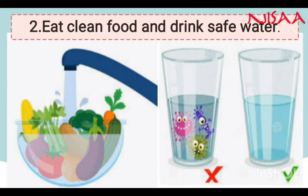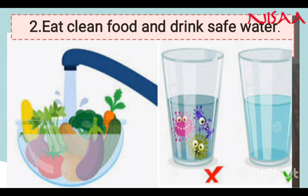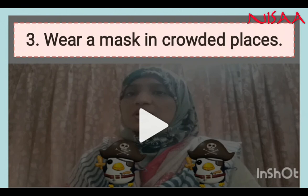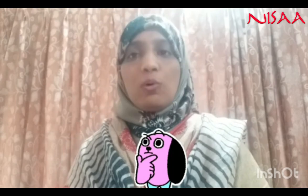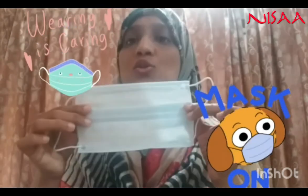Number 2: We must always eat food that is clean and covered, and we must drink water that is pure and safe. Number 3: Wear a mask in public places. Germs are everywhere. Germs are bad guys which enter your body and make you sick, so it is very important to wear a mask to protect ourselves from these germs.